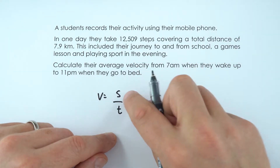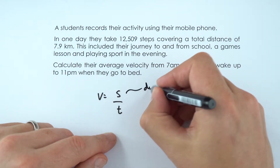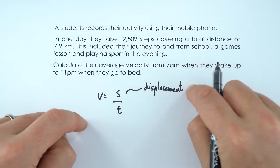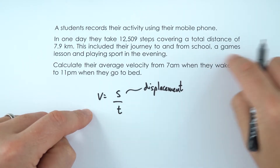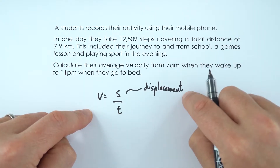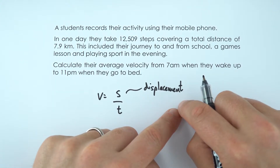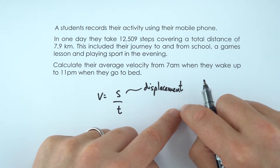Now displacement — and this is what this s stands for if we're looking at velocity — this is different to the distance, which is actually how far their legs actually move. Displacement is basically how far they ended up from where they started.